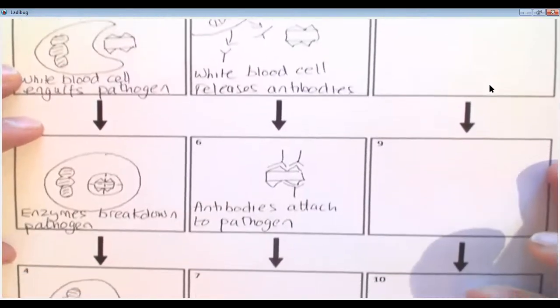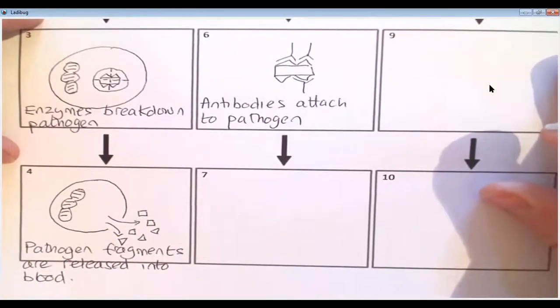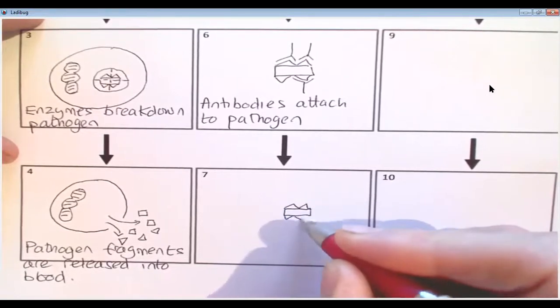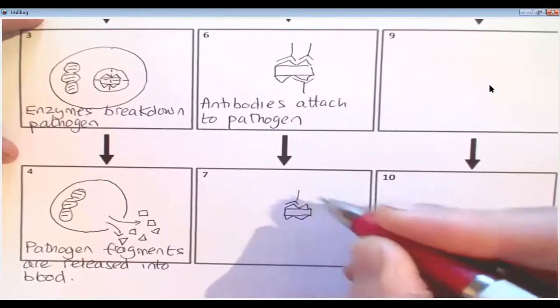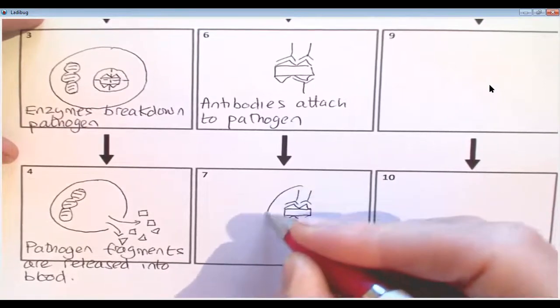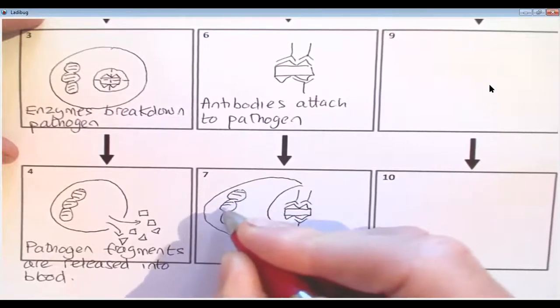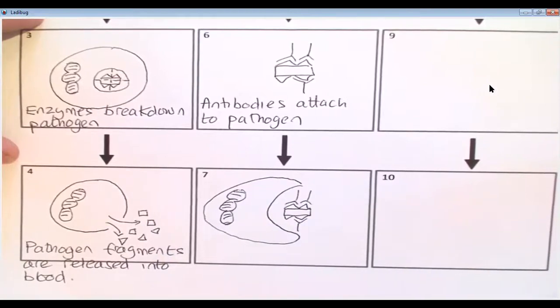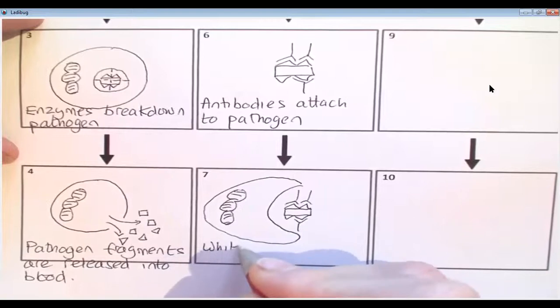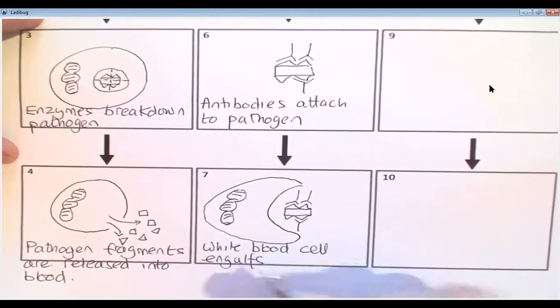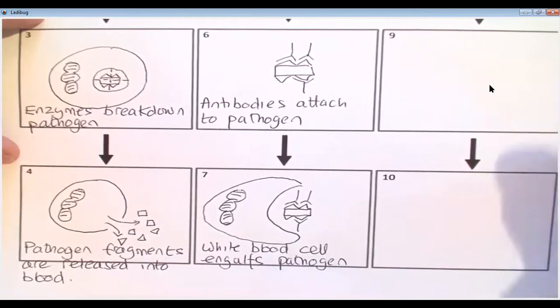And they sort of act like flags, or signals. And they essentially will send a signal for this process to happen. Which again, hopefully you'll recognize, is the process of phagocytosis. So white blood cell engulfs the pathogen. And it gets broken, the pathogen gets broken down, the fragments are released, et cetera. So that process will continue. So that's two ways.